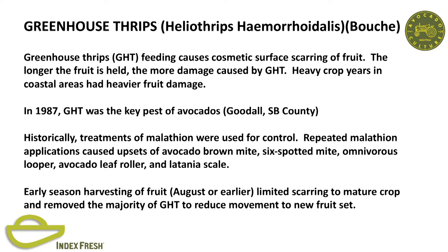Greenhouse thrips: the longer the fruit is held, the greater the damage. Heavy crop years in the coastal areas had very heavy damage. George Goodall, the extension agent for Santa Barbara County back in the 80s, said greenhouse thrips was the key pest. Historically treatments of malathion—repeated applications cause upsets of brown mite, six-spotted mite, looper, and latania scale. One cultural control is harvesting your fruit, getting it off the tree—you eliminate any more damage to the mature crop. If you do it roughly before August, you're also preventing the thrips from crossing over to your new crop. So that in itself is a control.